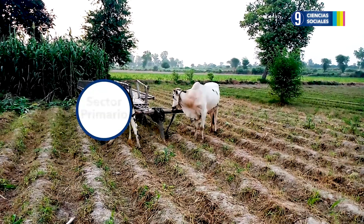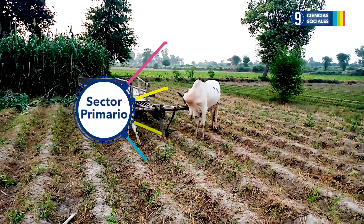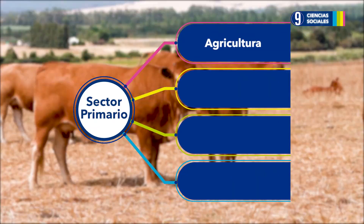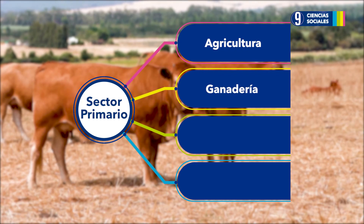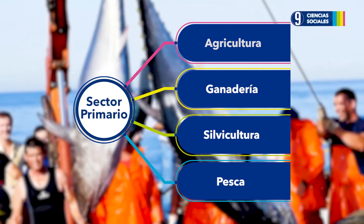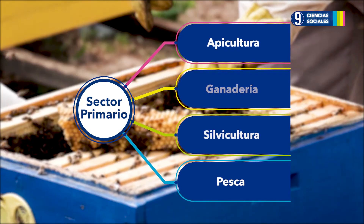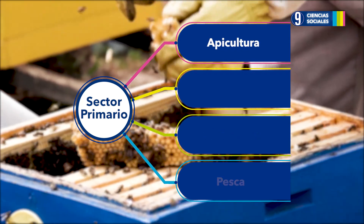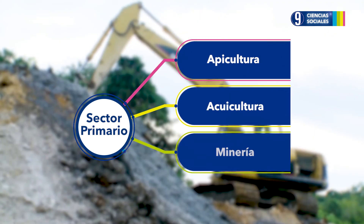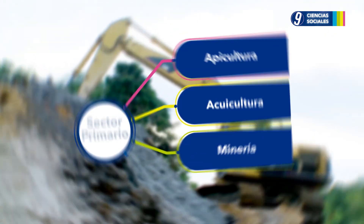Las actividades que conforman el sector primario son la agricultura, la ganadería, la silvicultura, la pesca, la apicultura, la acuicultura y la minería.